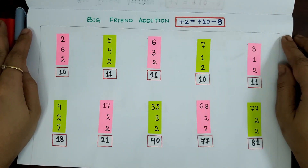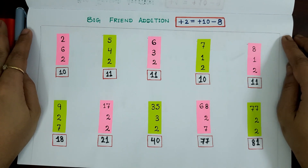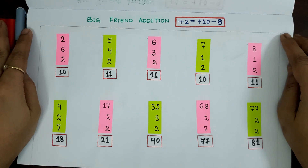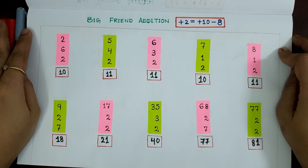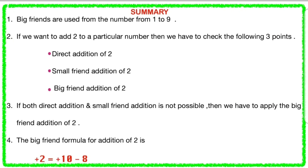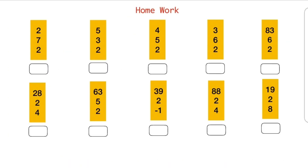Here, we have done with all the 10 examples. I hope you all clearly understood how and when we can apply the big friend addition of 2. In the next video, we will be learning one more big friend formula. This is the summary of this video and this is the homework for you. After practicing this worksheet, please let me know in the comments how this video was helpful to you.